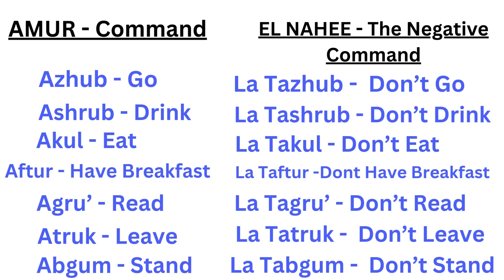To the right of the screen, we have El-Nahi — the negative command. Look at the word Azhub, which means go. So now we put La-Tazhub. La stands for don't, and Ta stands for you. So you can say don't go, don't you go, don't you drink, don't you eat. To simplify, I just put it as don't go.